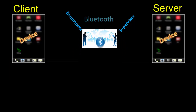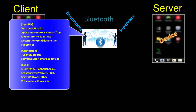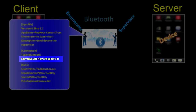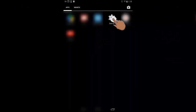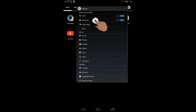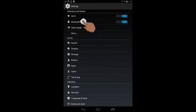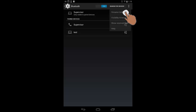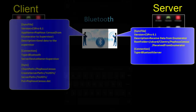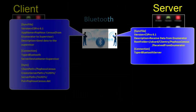Here we show the commands for the client, or the enumerator's tablet. Note that the server device name is the device name of the Android device. You can get this name by navigating to the Android device home screen, tapping on Settings, Bluetooth, and choosing Rename this device or Edit Device Name from the menu. Here we show the .pnc file for the server, which is the supervisor's tablet.